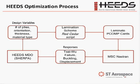NASTRAN is then run. We get our responses — which could be the Tsai-Wu failure criterion, buckling, and displacement, for example. HEEDS then reads in the response values and makes a decision for what the next design should be, and this process is repeated as we normally would during an optimization run.